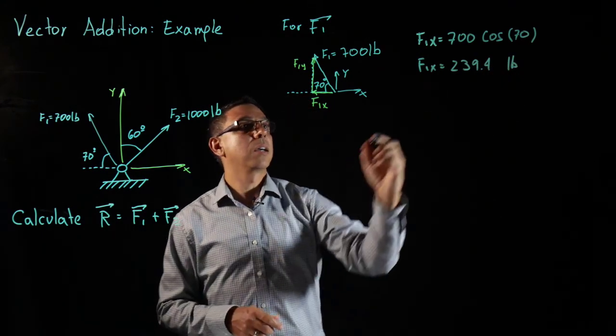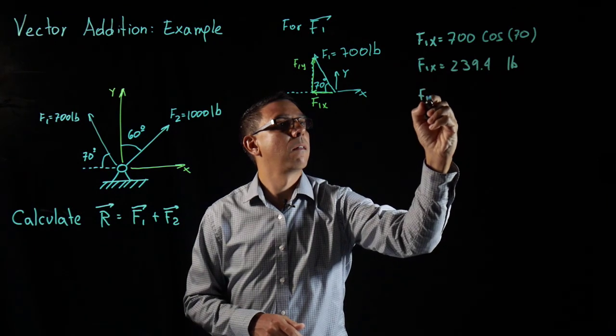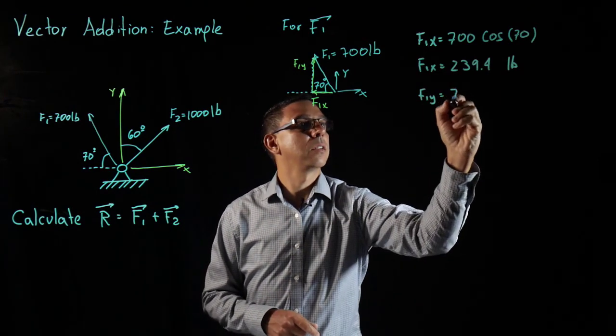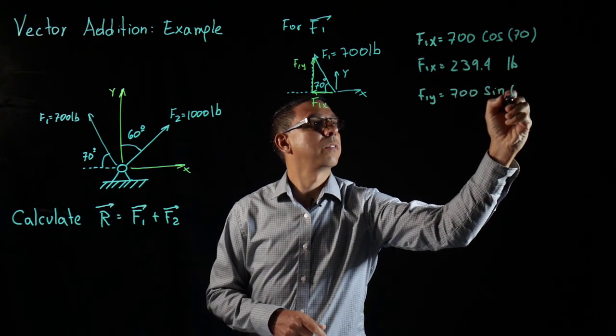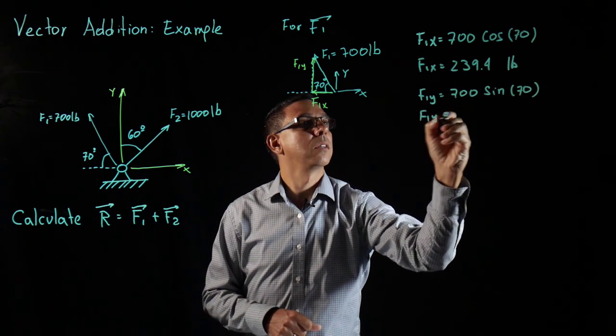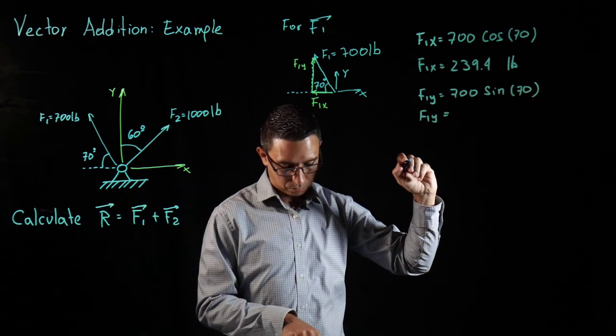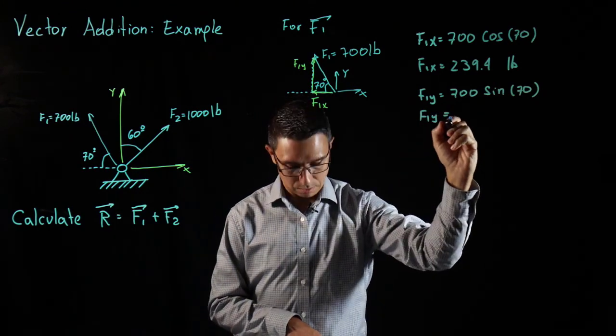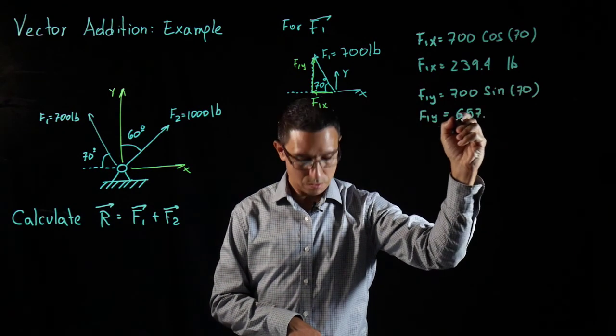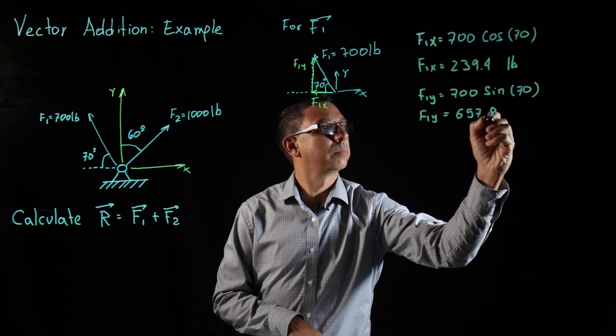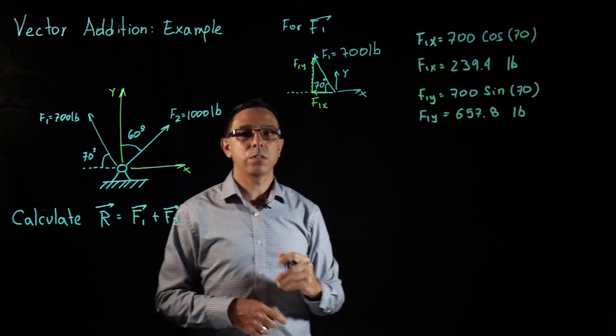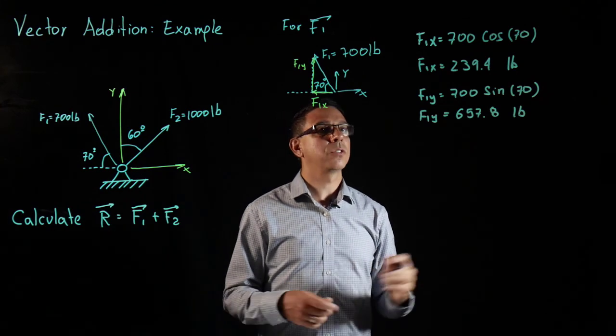And my F1Y is going to be 700 sine of 70. F1Y is equal to 657.8 pounds. I have four significant figures intermediate calculations, I have units in those two. We're good.